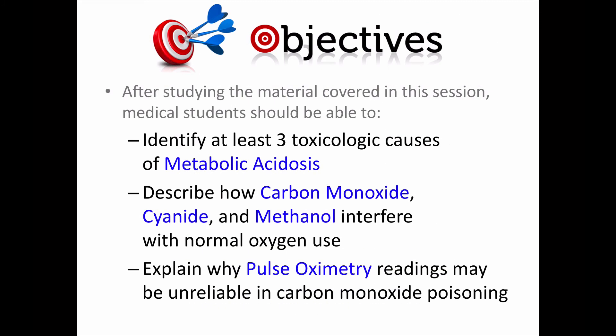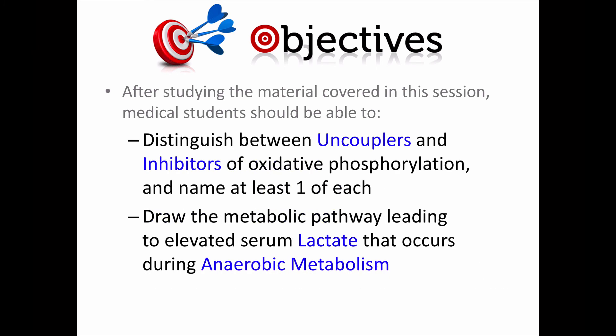The objectives are that after watching this presentation and studying the related materials, you should be able to identify at least three toxicologic causes of metabolic acidosis — and I just named three of them, so that shouldn't be difficult — to describe how CO, CN, and MEOH interfere with normal oxygen use, explain why pulse oximetry readings are unreliable with carbon monoxide poisoning, and be able to distinguish uncouplers of oxidative phosphorylation from inhibitors of oxidative phosphorylation, naming at least one example of each.